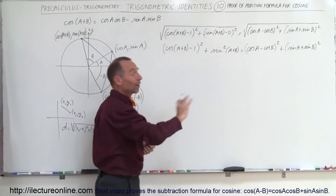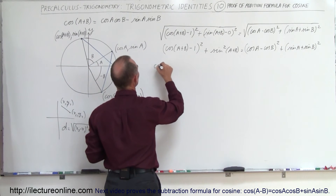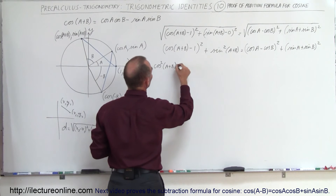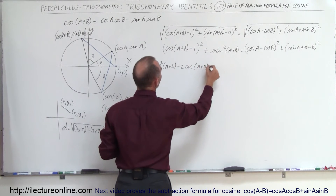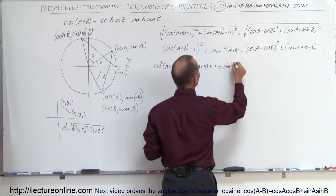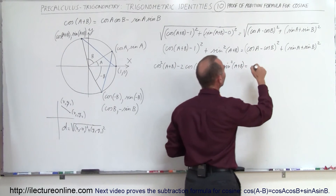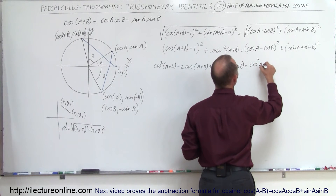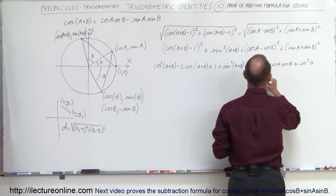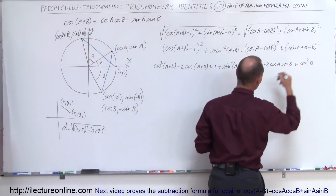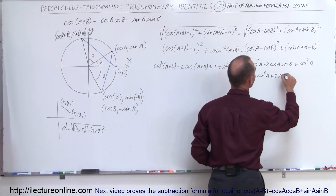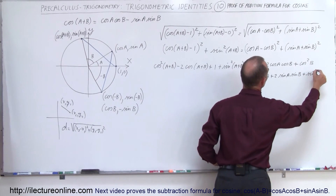Now I square both sides to eliminate the radical. On the left side I get cosine squared of A plus B, minus two times cosine of A plus B, plus one, plus sine squared of A plus B. On the right side, expanding gives cosine squared of A minus two times cosine A times cosine B plus cosine squared of B, plus sine squared of A plus two times sine A times sine B plus sine squared of B.